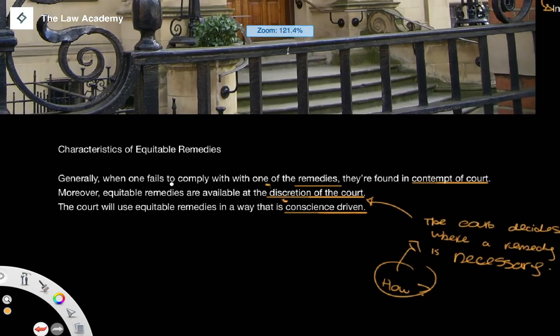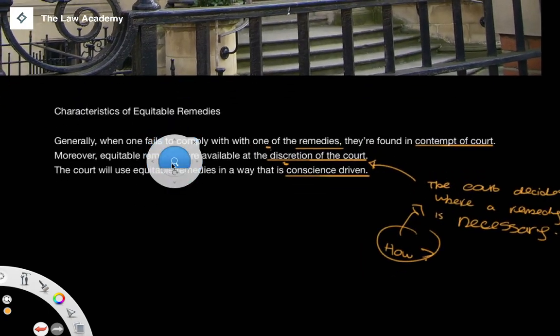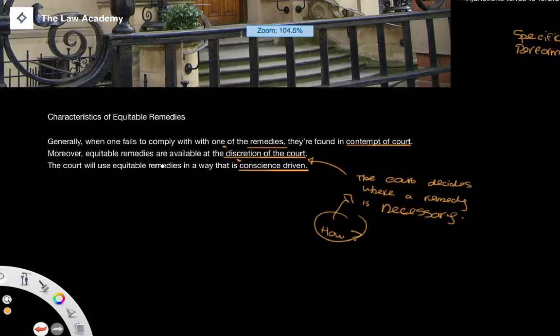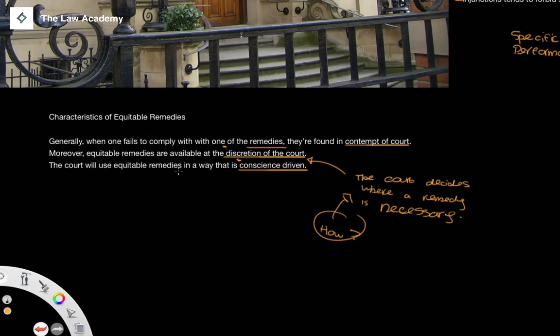In the next lesson, we're going to look at distinguishing between legal and equitable interests in land by looking at what it takes for something to be a legal interest in land. We're going to look at the Law of Property Act, and then we're going to look at the extra requirements that are needed for there to be a legal interest in land.